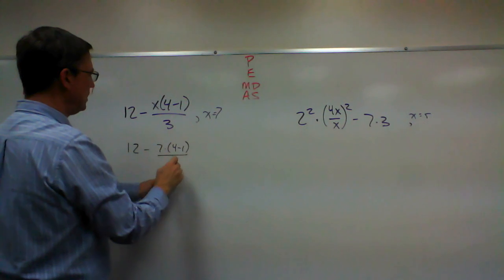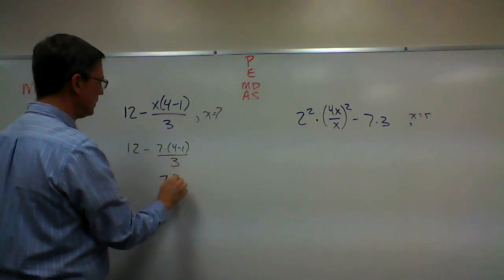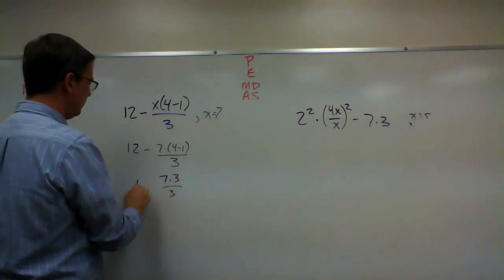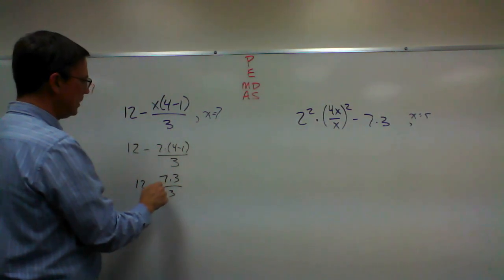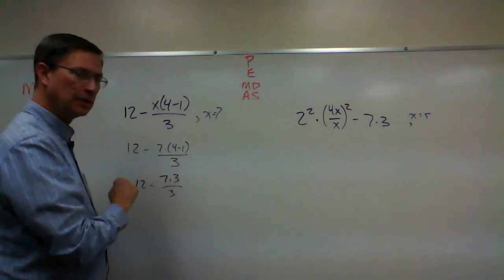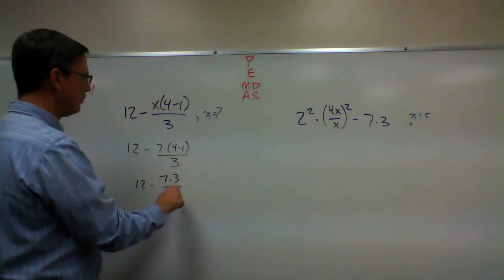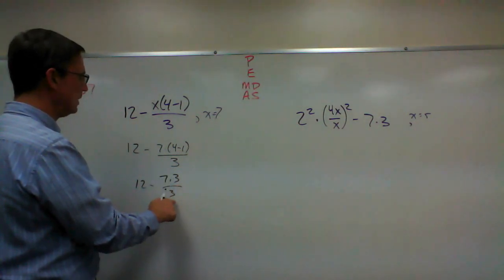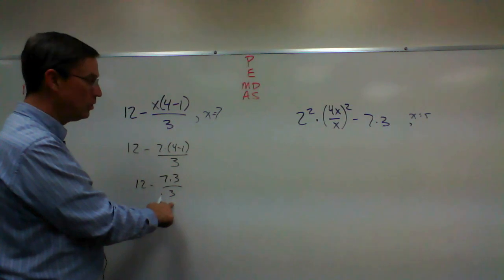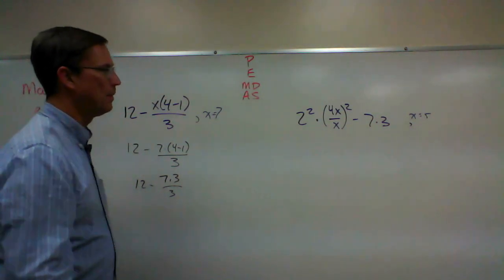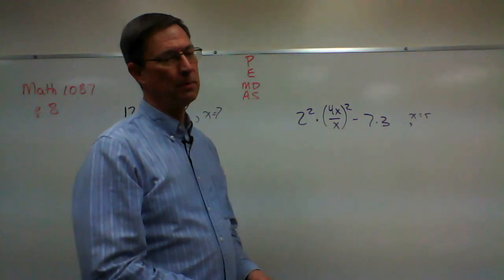4 minus 1 is 3, so 7 times 3, and that would give me 21. And then you would take the 21 and divide by 3, and then once you have that answer, which hopefully that's obvious to you, then you can finish that problem. I'm not going to do it for you or I'll give you the answer to one of your homework problems.